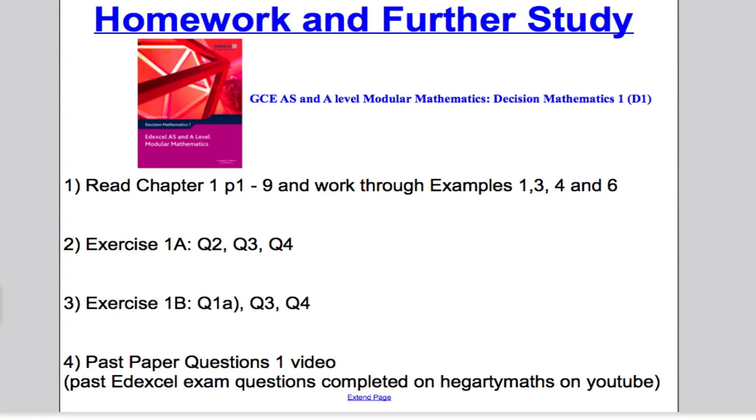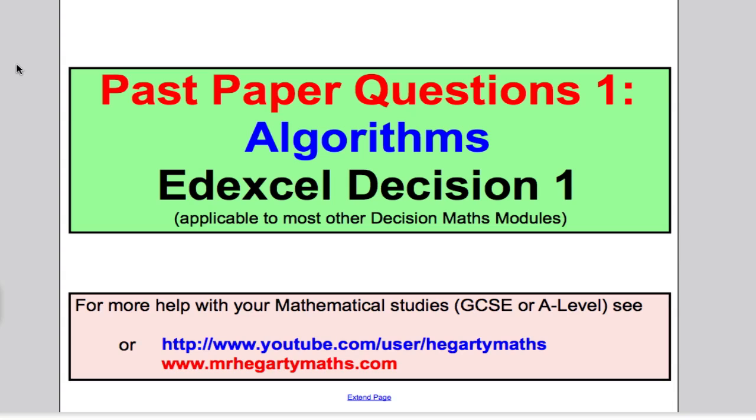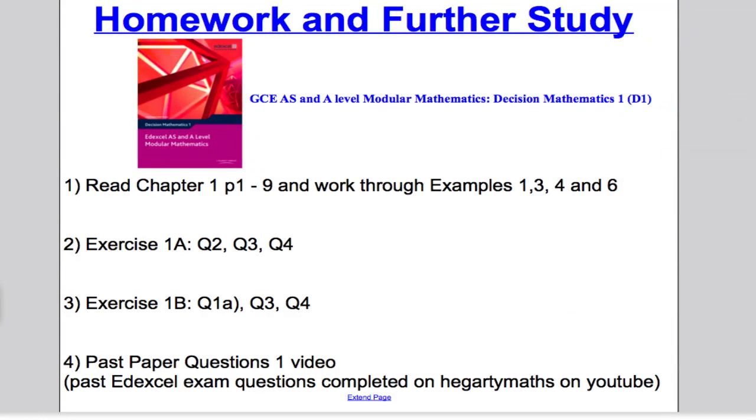Just to finish off, I'd like to suggest some work for you to do to consolidate what we've talked about in this tutorial. All this work suggested is from the Decision 1 Edexcel book. I think you should read Chapter 1, pages 1 to 9 and work through examples 1, 3, 4 and 6. You should do Exercise A, Question 2, 3 and 4 and Exercise 1B, Question 1A, 3 and 4. The last thing I suggest you do is move on to my next video which will be the Past Paper Questions video. Thank you for watching the video today. I hope you found it useful in your studies.